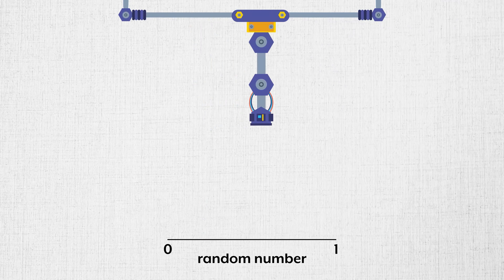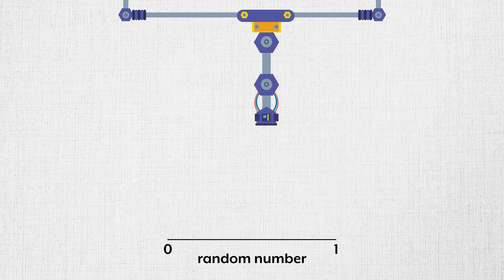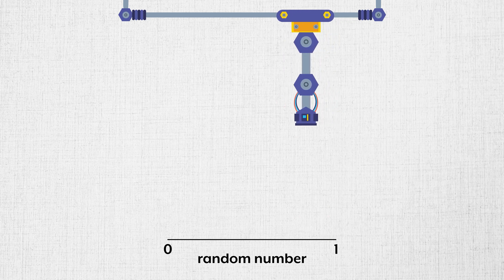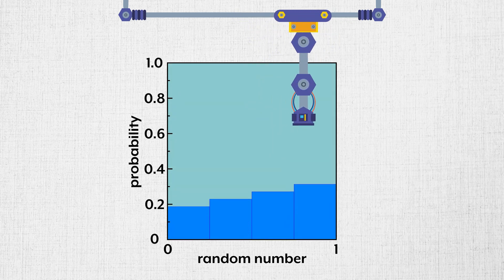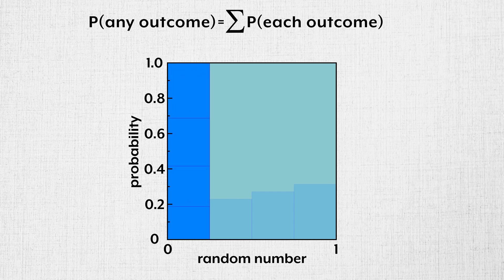Here's my one minute super condensed summary of Grant's video. Imagine a machine that randomly generates real numbers between 0 and 1 with a bias towards the larger numbers. There is some probability that the randomly generated number will fall within each of these ranges. The probability that any of these four outcomes will occur is the sum of the individual probabilities, and it adds up to 1.